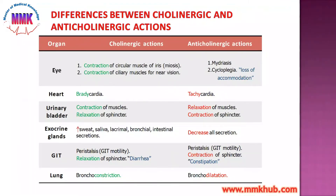In the GIT, the digestive system is governed by the cholinergic system, which is very important for peristalsis, GI motility, and relaxation of sphincters. When anticholinergic drugs are given, they inhibit this, leading to decreased motility and constipation.